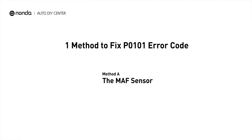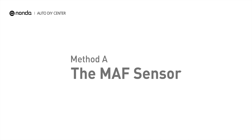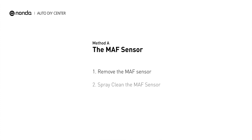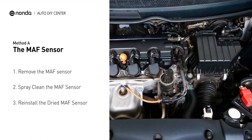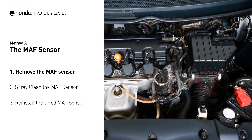Here is one simple DIY method you can try to solve this problem. Method A: MAF sensor. MAF sensors are located between the air filter and the throttle body.